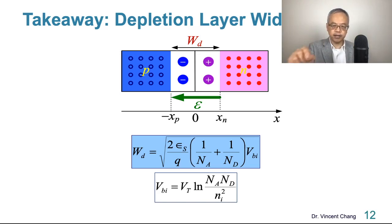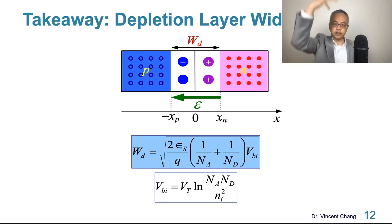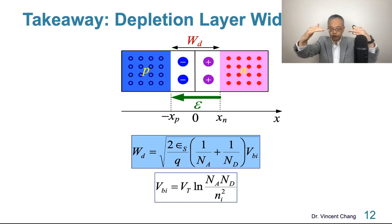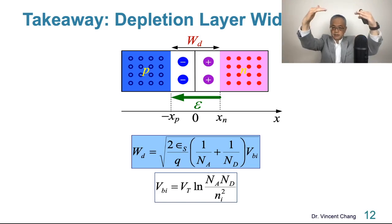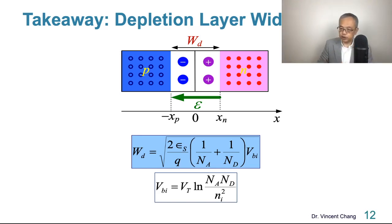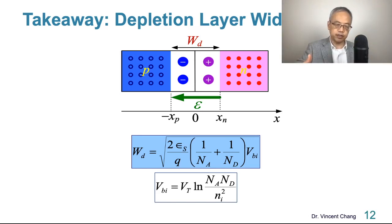This is the major takeaway of this lecture. In summary, we started from writing Poisson's equation and went from charge to electric field distribution through integration — constant to linear — then integrated again to the potential distribution to get the built-in potential, which equals the area of the triangle. We found the relationship between built-in potential and wd², giving us the final expression for depletion layer width. I hope you learned something from this lecture. Thanks for watching.